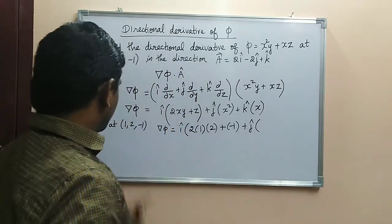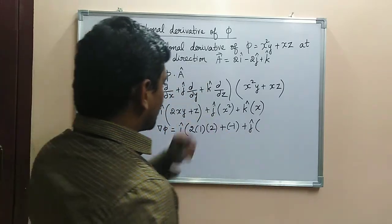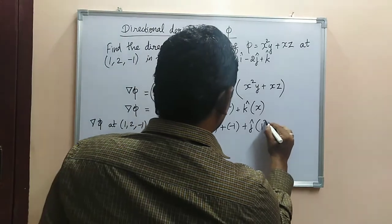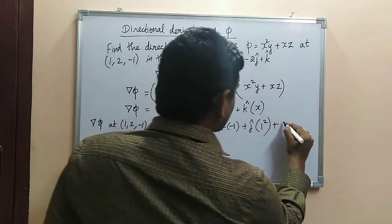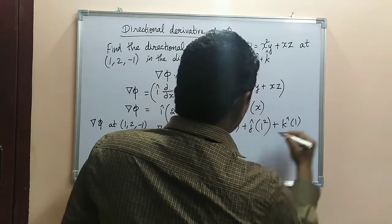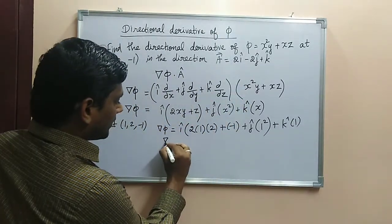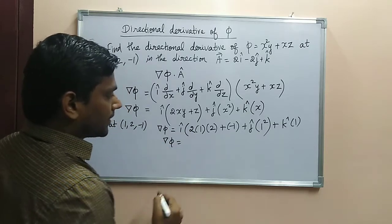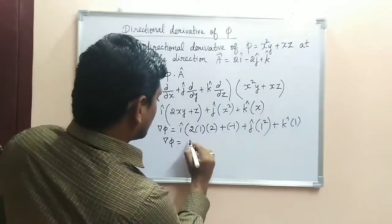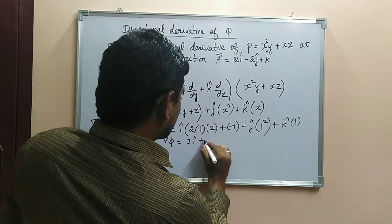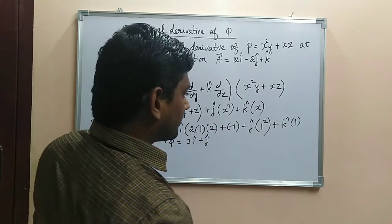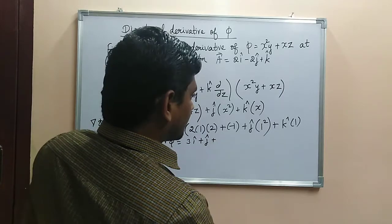J cap, so here x², x² is actually 1² plus x into k cap, that is k cap into 1. So this is ∇Φ is equal to 4 - e^(-1), that is 3i + j + k.